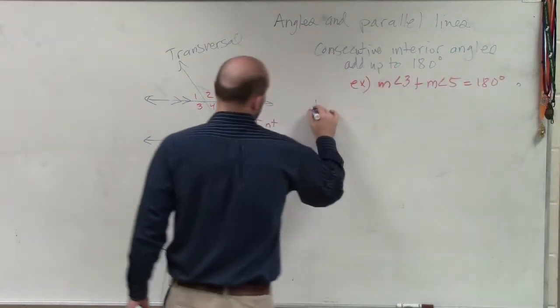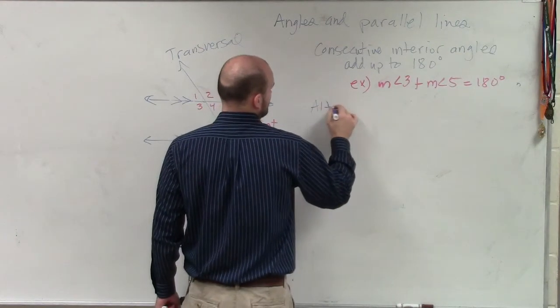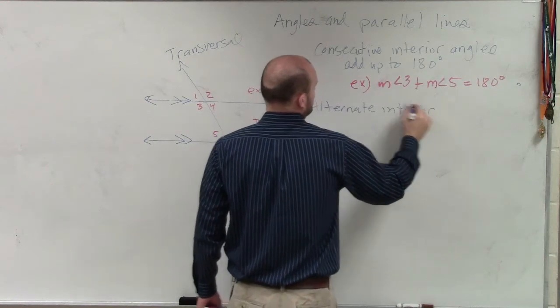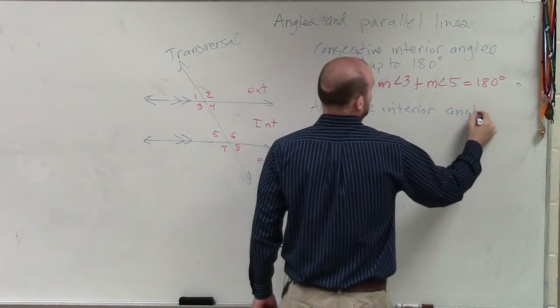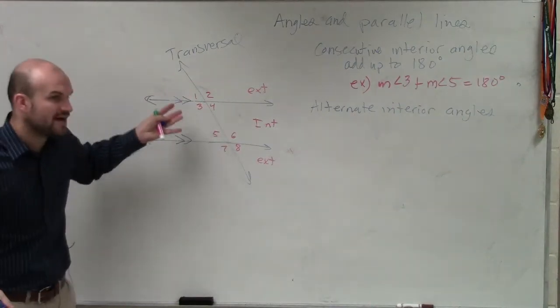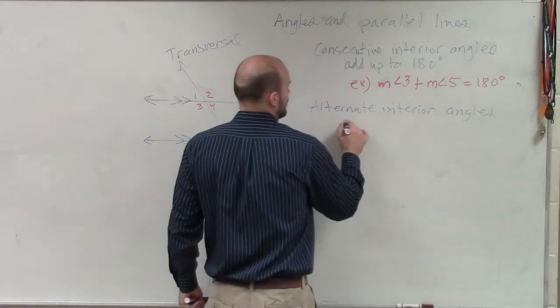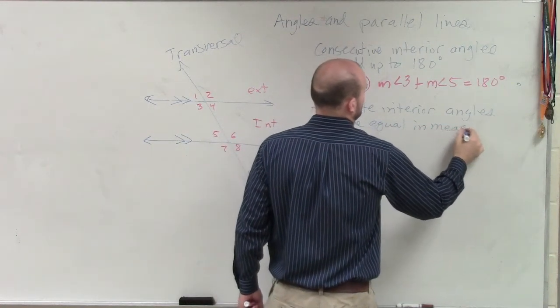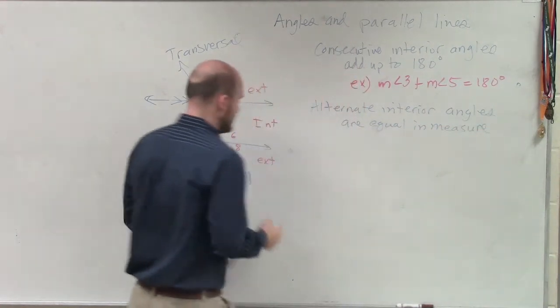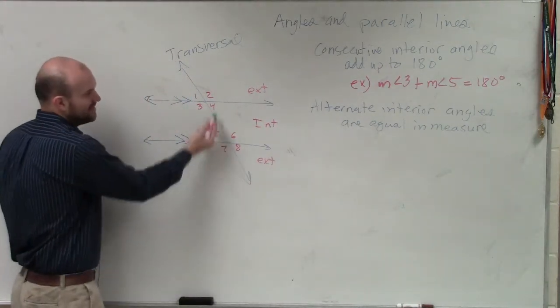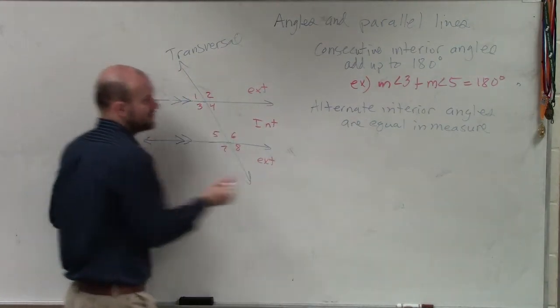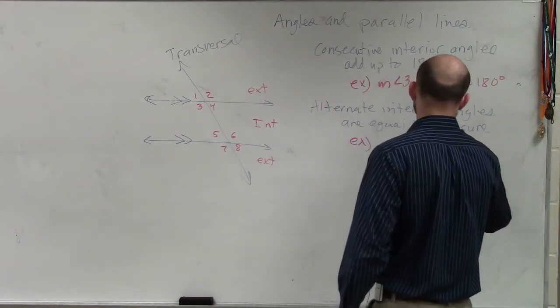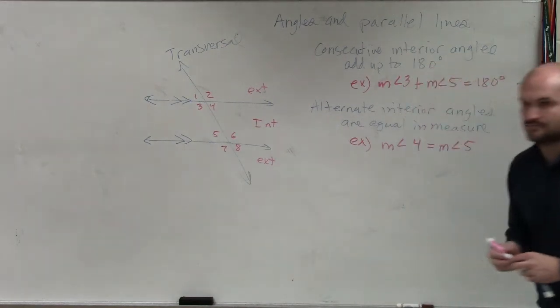The next one we talked about was alternate interior angles. And alternate interior angles, when you have parallel lines, are equal in measure. So therefore, my example is alternate. Remember, they both have to be interior, but they have to alternate the transversal. So my example would be measure of angle four is equal to measure of angle five. Okay?